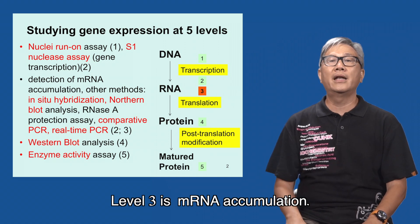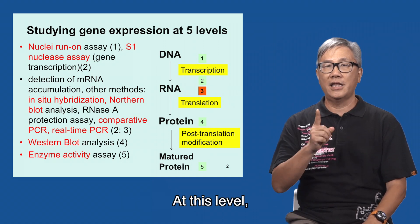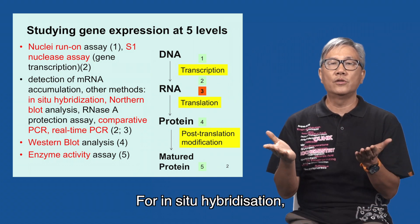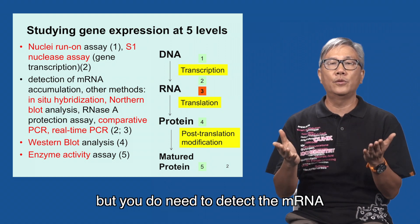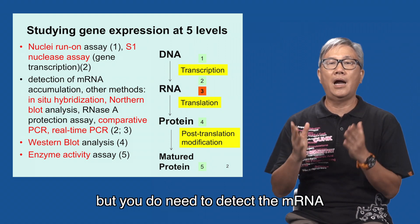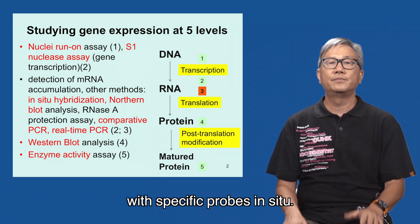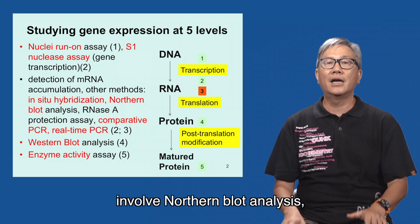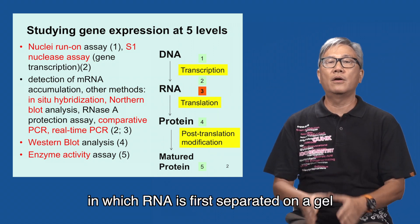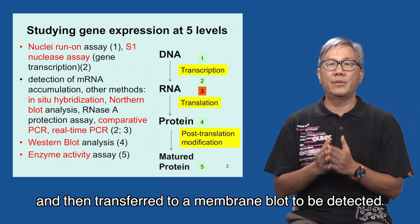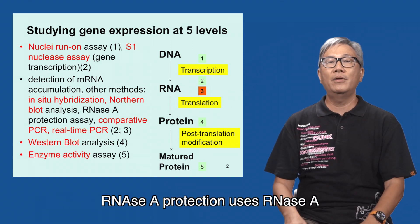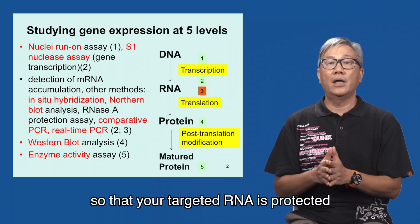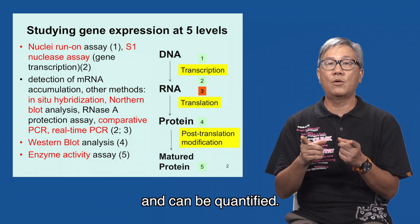Level three is mRNA accumulation. At this level, we need to purify total RNA for the analysis. For in-situ hybridization, you do not need to purify the RNA, but you do need to detect the mRNA with specific probes in situ. Other methods to detect mRNAs involve northern blot analysis, in which RNA is first separated on a gel and then transferred to a membrane blot to be detected. Ribonuclease protection uses ribonuclease to digest unprotected RNA so that your target RNA is protected and can be quantified.